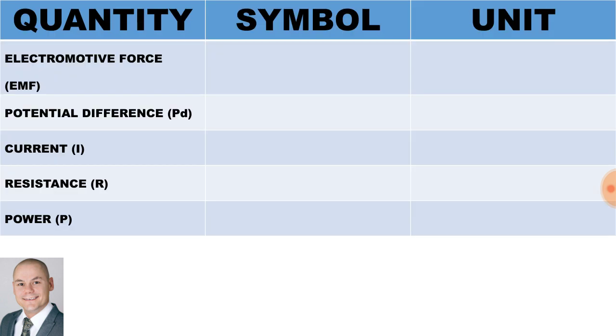Here we have a table with our quantity and measurement to the far left. And we need to fill in the missing information for the symbol and unit. The electromotive force is V and the units is volts. The potential difference is V and the units is volts.